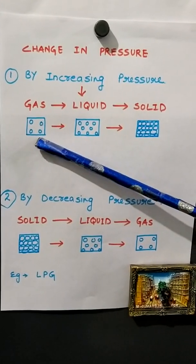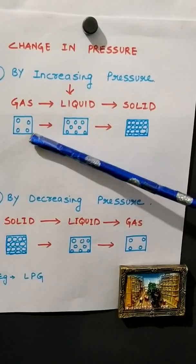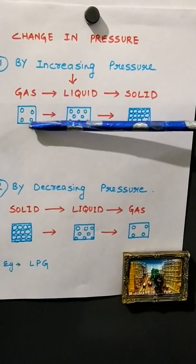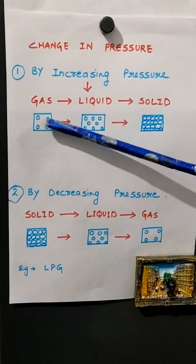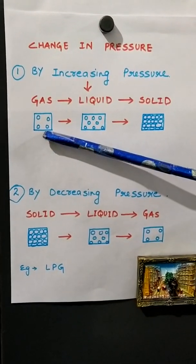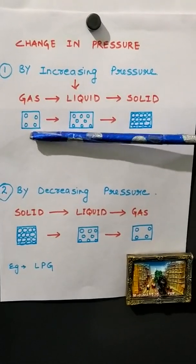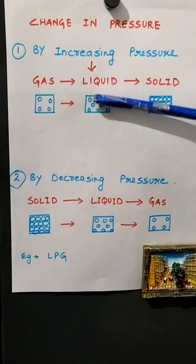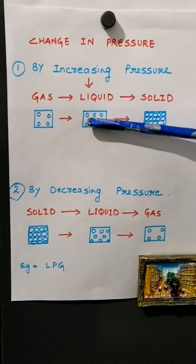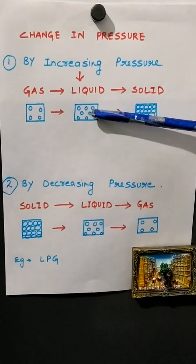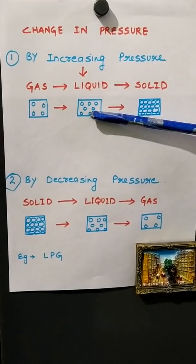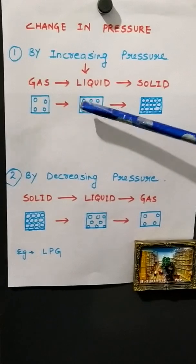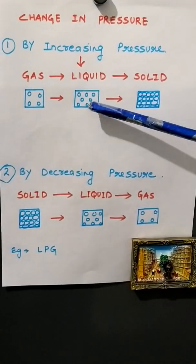When you have a piston in a vessel and you increase the pressure by pushing the piston down, the area is reduced but the number of particles remains the same. So in a smaller area, those same particles have to be adjusted. They come closer to each other, giving it the form of liquid state. Similarly with liquid — when you compress it, increasing the pressure gives a smaller area to the particles. They become closely packed, giving it the form of solid. So by increasing the pressure, gas gets converted into liquid and liquid gets converted into solid.